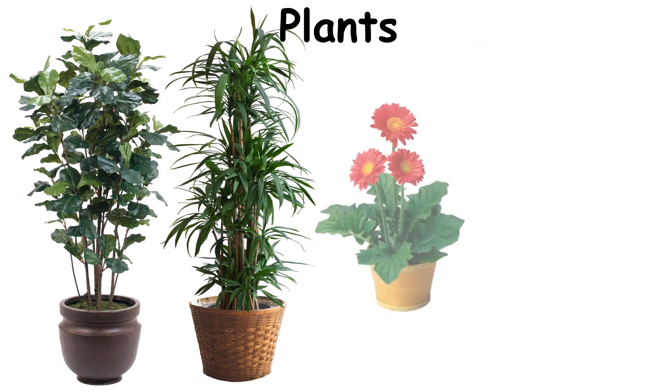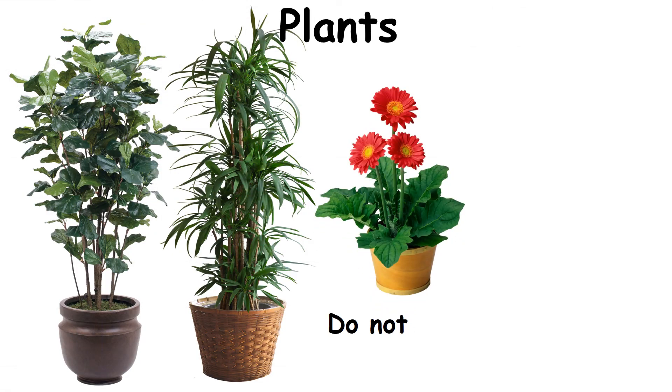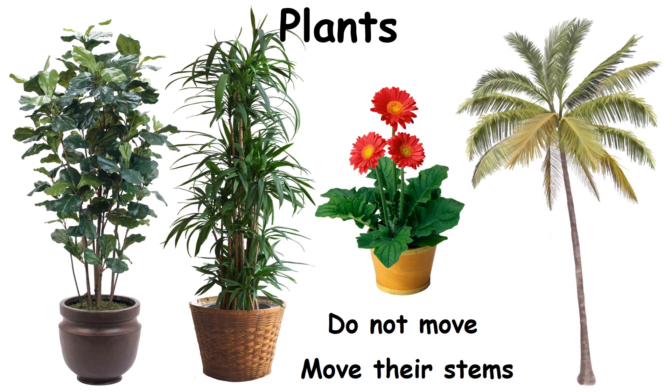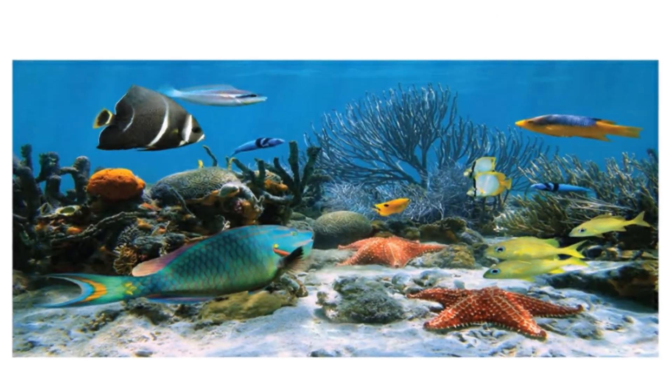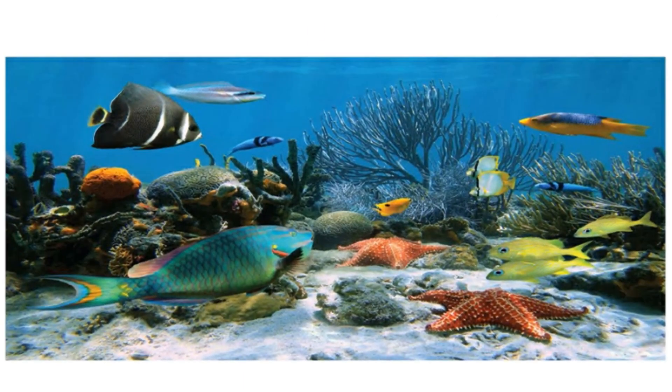Plants do not move from place to place, but they move their stems to face the sun. Some living things live in water — for example, fish.